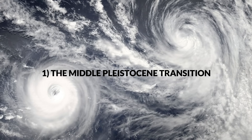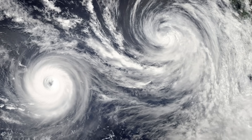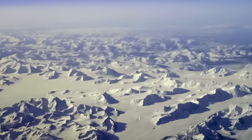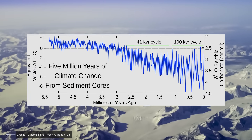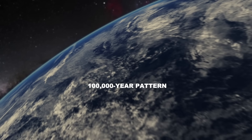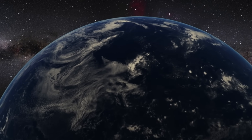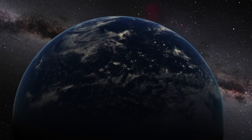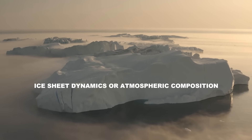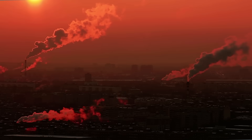1. The middle Pleistocene transition. One of the critical challenges in Milankovitch's theory is the so-called middle Pleistocene transition, a change in glaciation patterns that occurred about 1 million years ago. Before this transition, glacial cycles followed a 41,000-year pattern, coinciding with the obliquity cycle. However, after the transition, they changed to a 100,000-year pattern, aligning with the eccentricity cycle, although eccentricity has a more minor effect on received solar radiation than obliquity. Milankovitch's theory does not fully explain this change, suggesting that other factors such as ice sheet dynamics or atmospheric composition could play a crucial role in modulating Earth's climate.